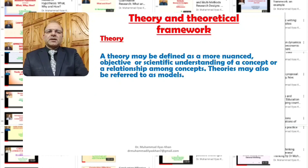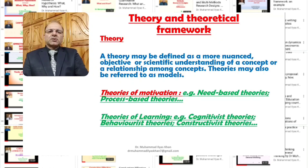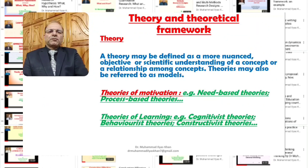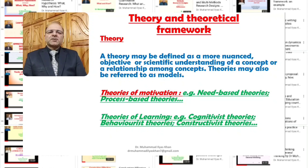Now, theory and theoretical framework. A theory can be defined as a more nuanced, objective, or scientific understanding of a concept or a relationship among concepts. Theories may also be referred to as models. For example, the theories of motivation — we just discussed the concepts of motivation and learning. There are certain theories related to motivation, for example need-based theories and process-based theories.